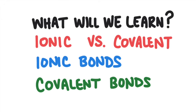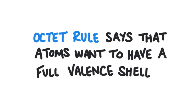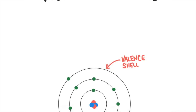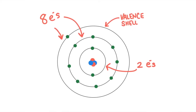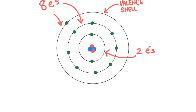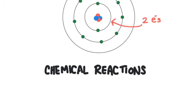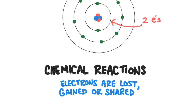We learned in a previous lesson that atoms want to obey the octet rule. The octet rule states that atoms want to have a full valence shell of electrons — that is the outermost energy level. The first energy level can hold two electrons, and then each energy level after that can hold eight electrons. Atoms work to follow the octet rule by participating in chemical reactions to create chemical compounds, bonding with other atoms to form compounds.